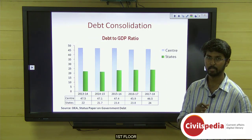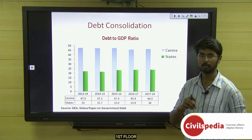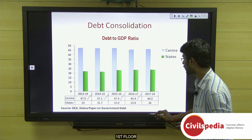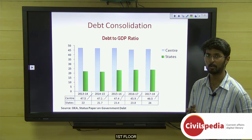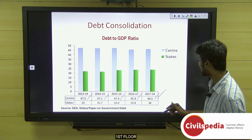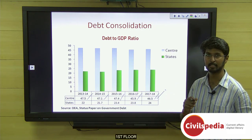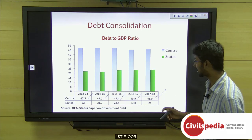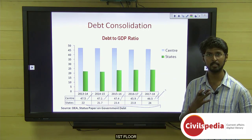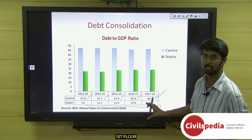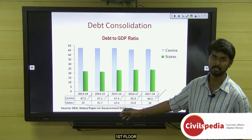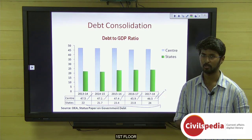Looking at the debt-to-GDP ratio over the previous five years for the central government: 47.5 → 47.1 → 47.4 → 45.9 → 46.5 (the recent rise is due to money pumped in for bank recapitalization). Negating that, the center is broadly working towards its goal. However, the states' overall debt-to-GDP ratio is increasing year on year. This data is published in the status paper on government debt by the Department of Economic Affairs under the Finance Ministry, useful for mains.